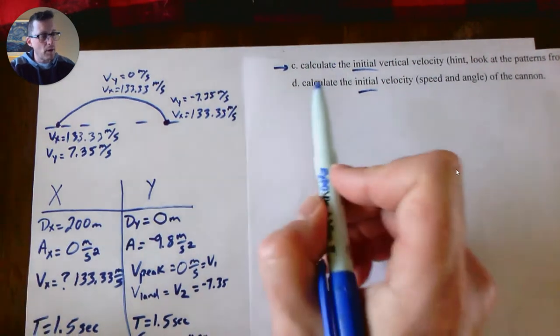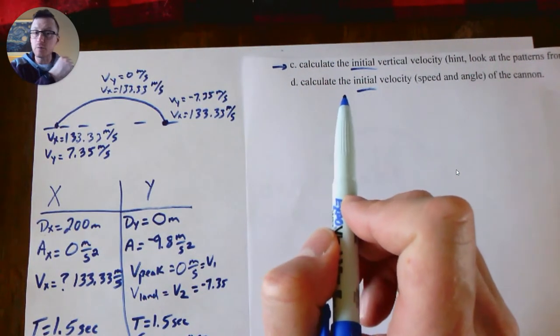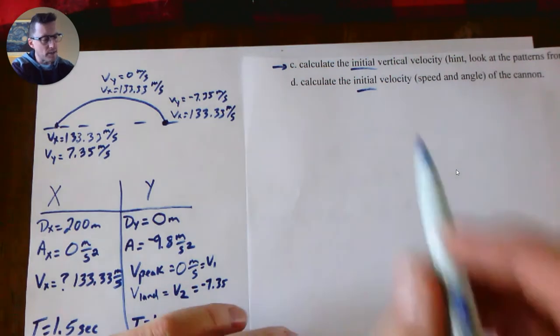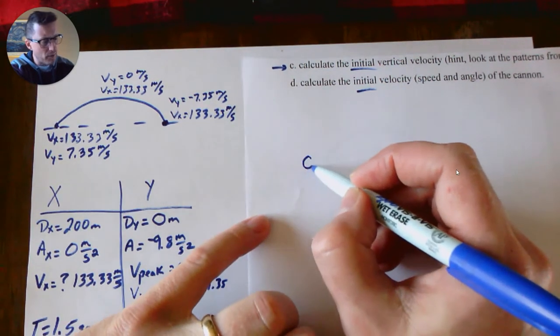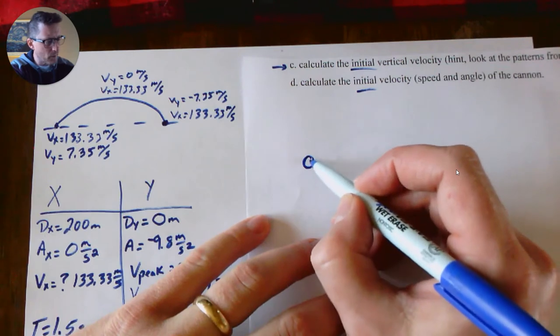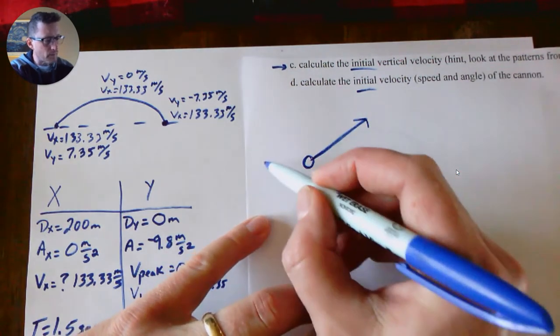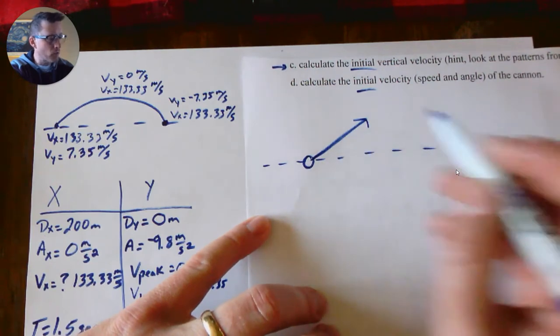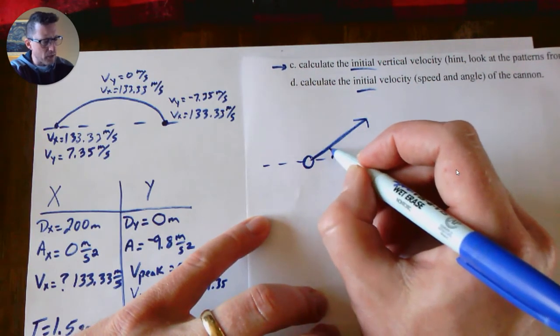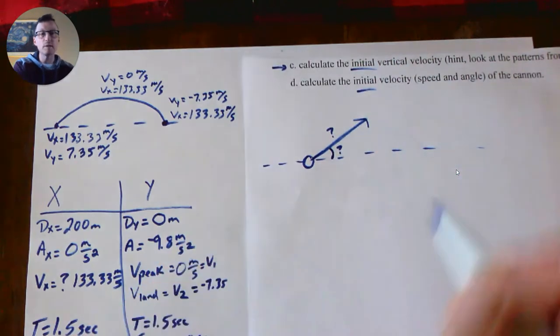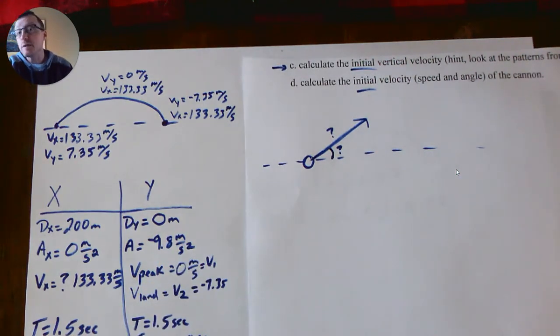So how do we calculate the actual initial velocity then of the cannonball? This is saying: here is when the cannonball is launched. What is its actual velocity, and if we imagine the horizontal line, what angle is it launched at? That's what letter D is asking.